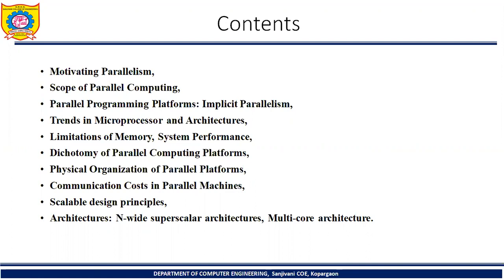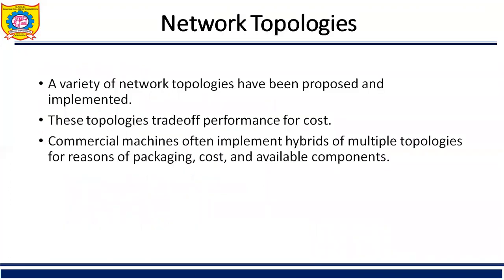Previously we have seen the physical organization of parallel platforms. In that article we learned how physical computers communicate with other computers and memory in a network architecture. That architecture is called PRAM — Parallel Random Access Machine. Now there are different network topologies available to organize the processor and memory in parallel platforms, and a variety have been proposed and implemented. This topology trades off performance for cost. Commercial machines often implement a hybrid of multiple topologies for reasons of packaging, cost, and available components.